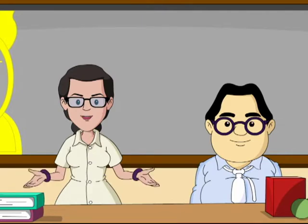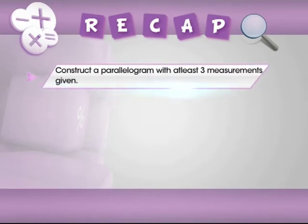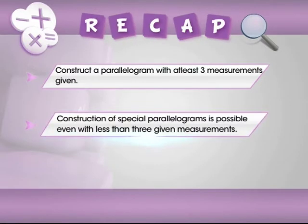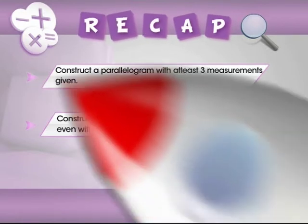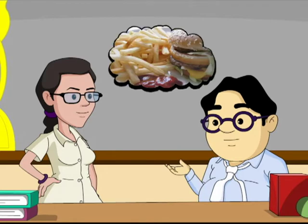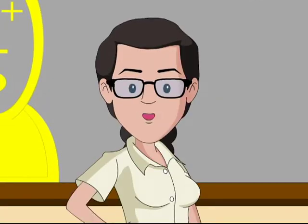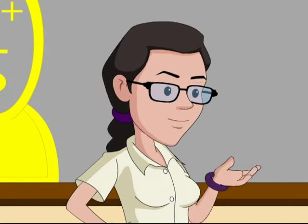Now for a quick recap: in this module we have learnt to construct a parallelogram with at least three measurements given — be it two sides, a diagonal length, an angle, or an altitude. Construction of special parallelograms like rhombus, rectangle, and square is possible even with less than three measurements. Snail asks if he can go eat, and after a laugh, he says bye to everyone.